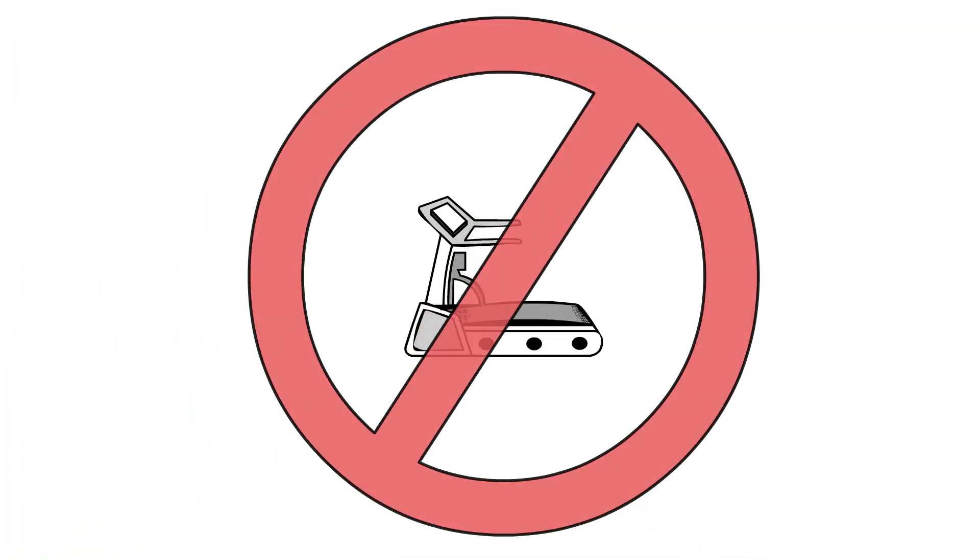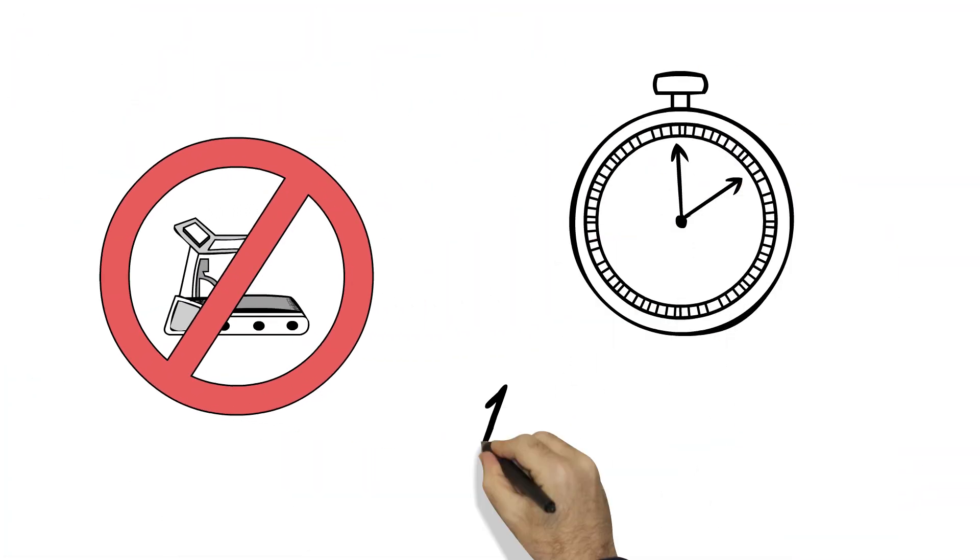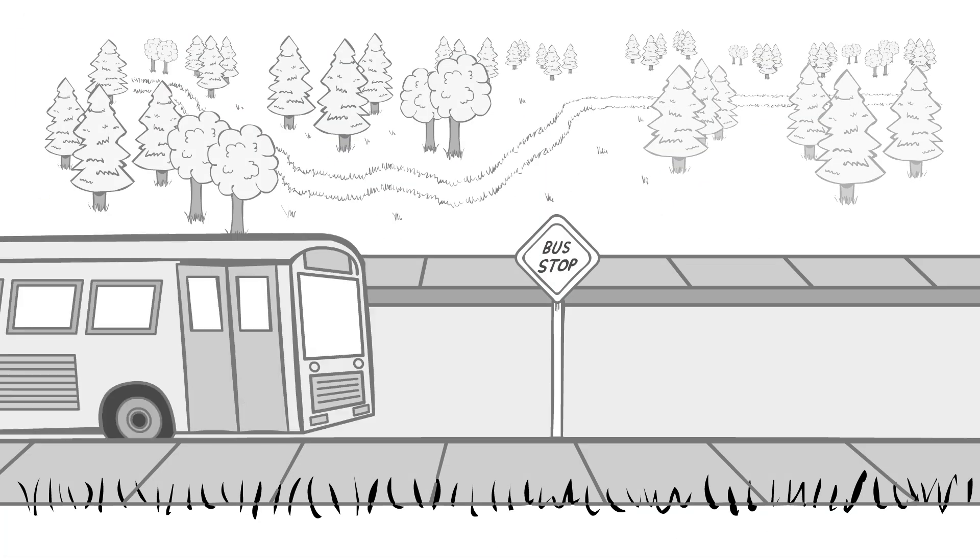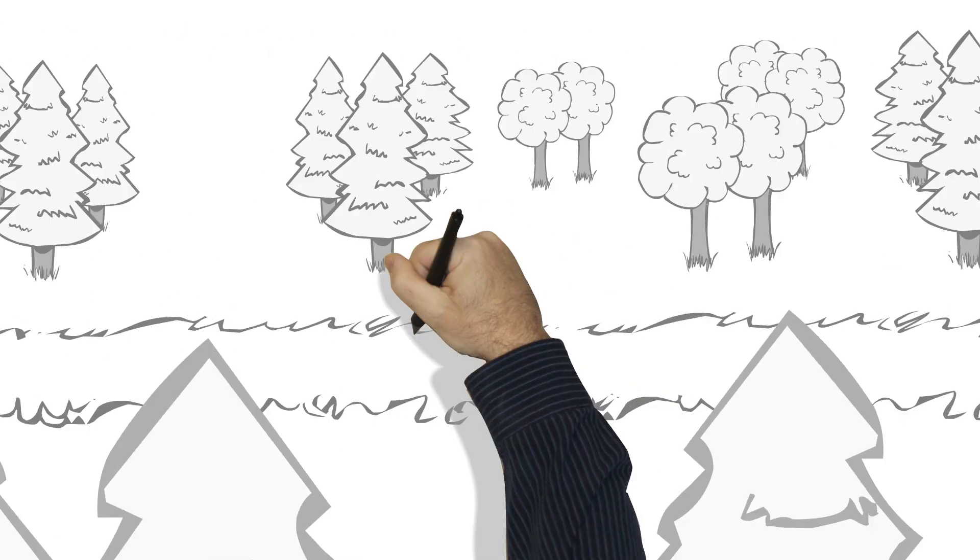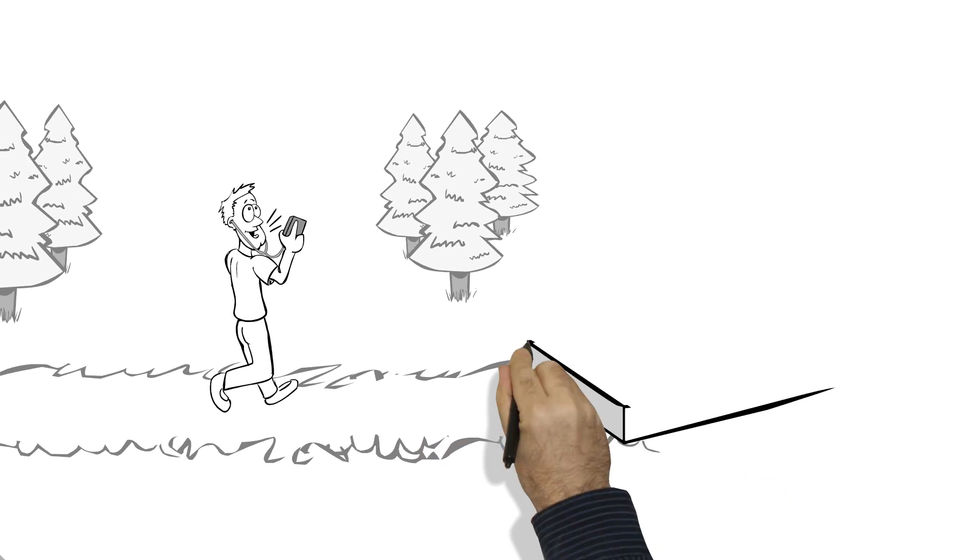And by exercise, I don't necessarily mean going to the gym for an hour. As little as 10 minutes of activity counts, and you can do it just about anywhere, like getting off the bus a stop early, walking to lunch, having a walking meeting, walking while on the phone, or taking the stairs.